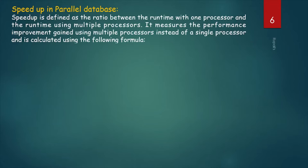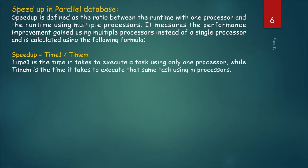Speedup is defined as the ratio between the runtime with one processor and the runtime using multiple processors. Speedup equals Time_original divided by Time_parallel, where Time_original is the time required to execute the task using one processor, and Time_parallel is the time required using multiple processors. It measures the performance improvement from using multiple processors instead of a single processor. The formula is: Speedup = Time_1 / Time_m, where Time_1 is execution time with one processor and Time_m is execution time with m processors.